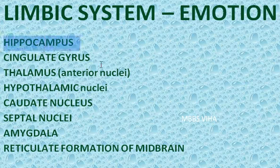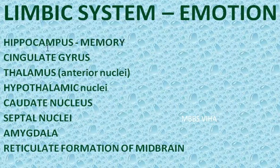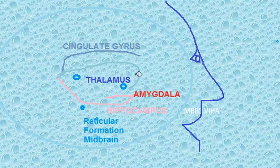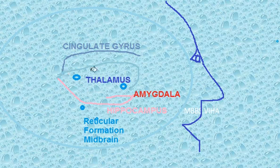Remember hippocampus — it is concerned with memory, so hippocampus is a part of the limbic system. Cingulate gyrus — if you have seen the brain, there is a really big curve there. I will show you the diagram: this is the eye, this is the nose, so that you get a perspective. This is the cingulate gyrus, and here is your hippocampus — both are parts of the limbic system.